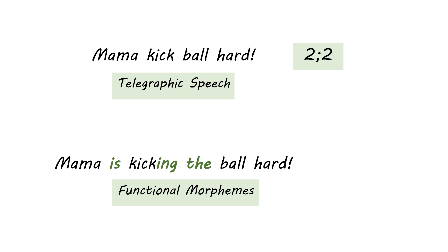An adult-sounding sentence would be 'mama is kicking the ball hard,' and this contains various functional morphemes that are necessary to the structure of the sentence. Some of these are words, some of them are morphology. In this lesson we're going to talk about the morphology, and the sort of basic functional morphology is usually in place by around three years old — this happens during your second year for the most part, though some of this will continue happening throughout early childhood.